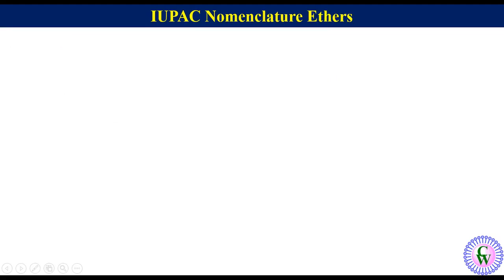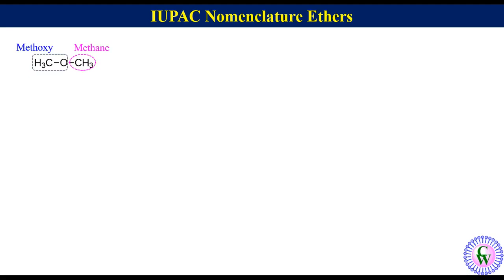Now let's go through examples. We will start with the simplest ether, CH3OCH3. In this molecule both groups attached to the oxygen have the same number of carbon atoms. So one will be considered as the parent chain, which is methane, and the other will be part of the alkoxy group, which is methoxy. Thus the IUPAC name will be methoxymethane.